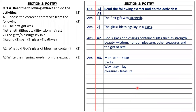Next is section three, based on poetry. Three questions are based on a poem. A1: the first gift was strength and the gifts of blessings lay in glass. A2: what did God's glass of blessings contain? God's glass of blessings contains gifts such as strength, beauty, wisdom, honour, pleasure, other treasures, and the gift of rest.